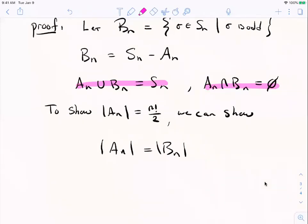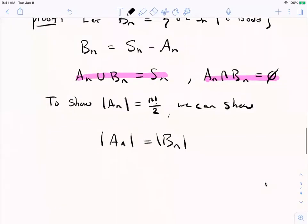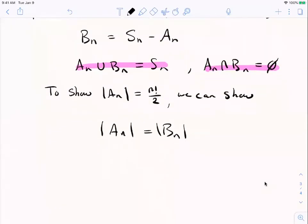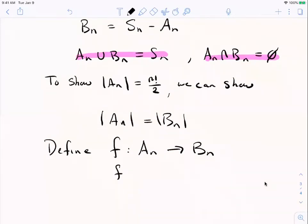A sub n and B sub n would have to be the same size. If they're the same size, then they would have to be half the elements in S n because they account for everything with no overlap. Okay. So a good way to show that two sets are the same size is to find a bijection between them. So I'm going to define a function F from A sub n to B sub n, even permutations to odd permutations, by saying that, say, F of sigma is, let's just follow sigma by the transposition one, two. Right?